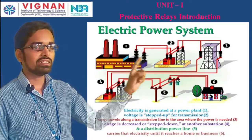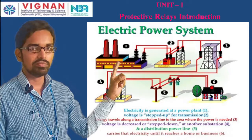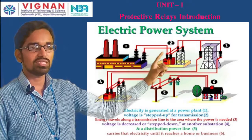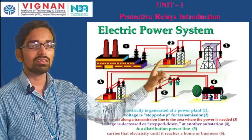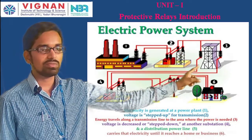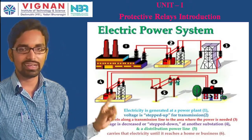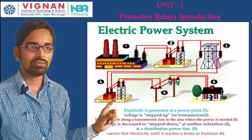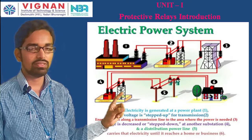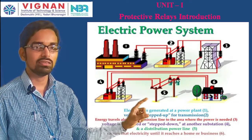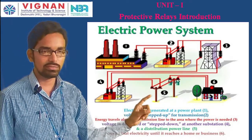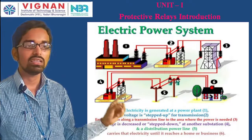In India, we mostly have 11 kV generation. That 11 kV is stepped up to 120 kV, 220 kV, 400 kV, or 765 kV for transmission. At distribution stations, 400 kV is stepped down to 11 kV for primary distribution, and then a further step-down transformer reduces it to 415 volts for secondary distribution.